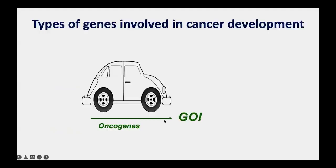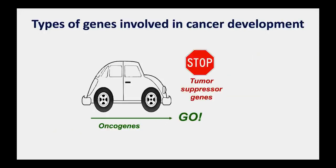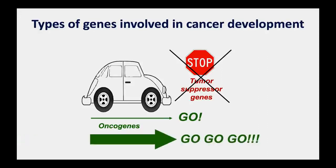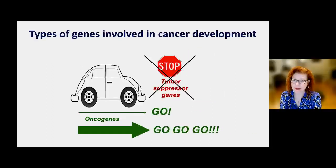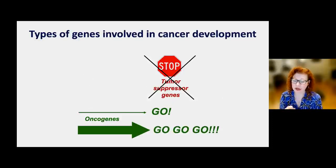Oncogenes are like the gas pedal—they move us forward when we need to. Tumor suppressor genes are like the brakes—stopping the car. With both working properly, we move forward in a very controlled fashion. But when we lose tumor suppressors—losing the brakes—or our gas pedal gets stuck down, in either case the cells are growing and proliferating uncontrollably.